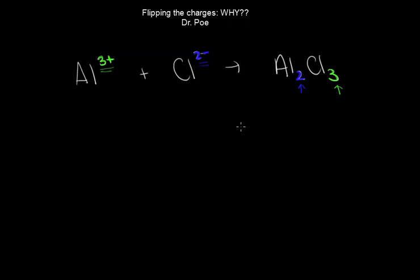The idea here is that we want the overall charge to be zero. Notice how there's no charge right here. We want the overall charge of the molecule to be zero. That's really why we end up flipping the charges. So let's go ahead and just write this out a different way.